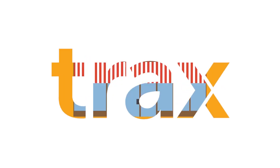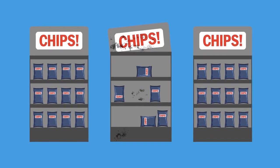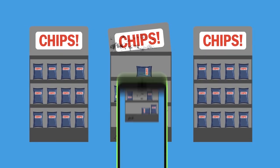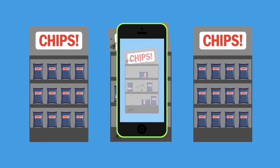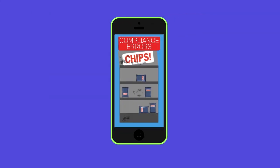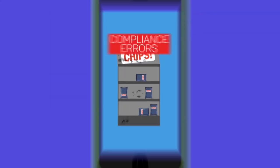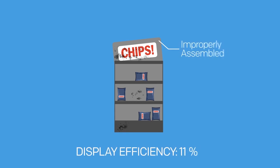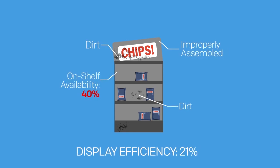TRAX Retail Snapshot enables you for the first time to quantify and see execution at a store level, which opens up a huge opportunity to drive greater efficiency. You have visibility into promotion compliance and on-shelf availability that can be viewed based on how you organize your retail labor force.